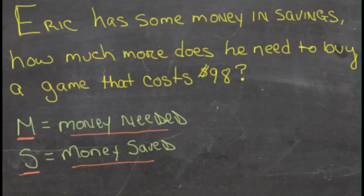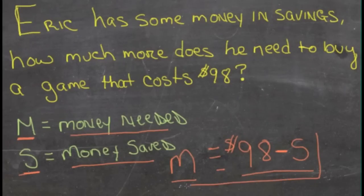Now, if the game costs $98, and we take away the amount of money that he's saved, S, that should give us the amount of money that he needs to save up, M. So M is equal to 98 minus S, and that is the most concise version of our equation.